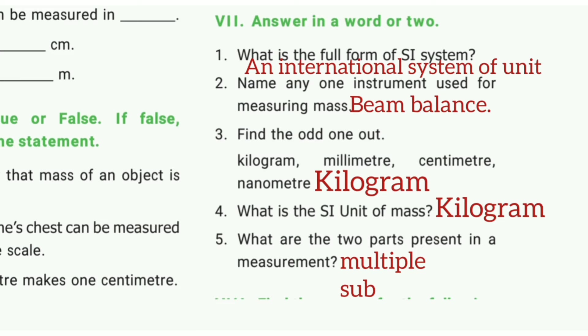Third one: Find the odd one out. The answer is kilogram. Fourth one: What is the SI unit of mass? The answer is kilogram.